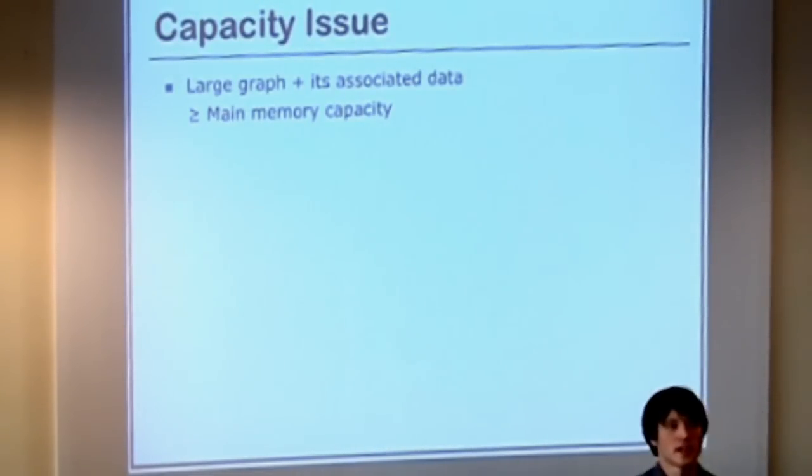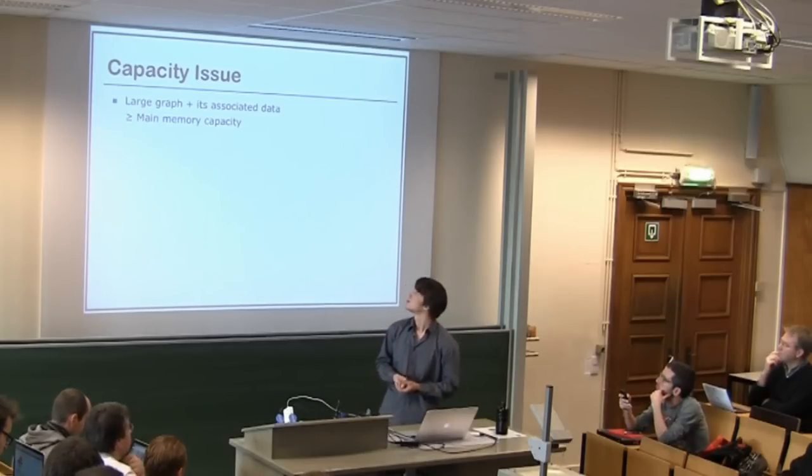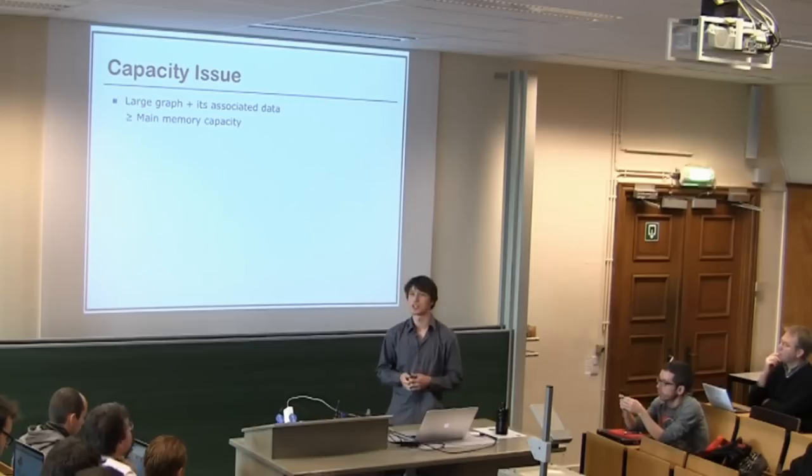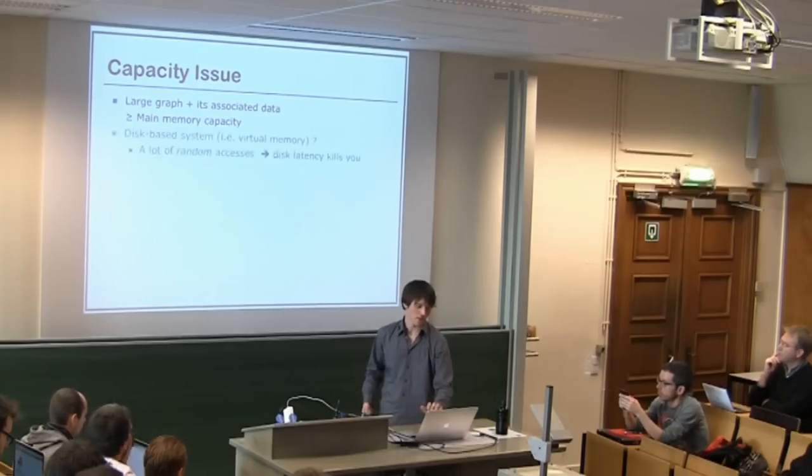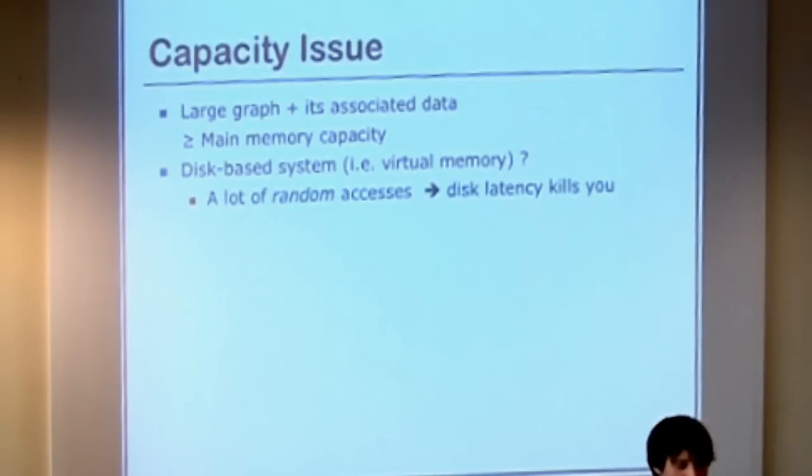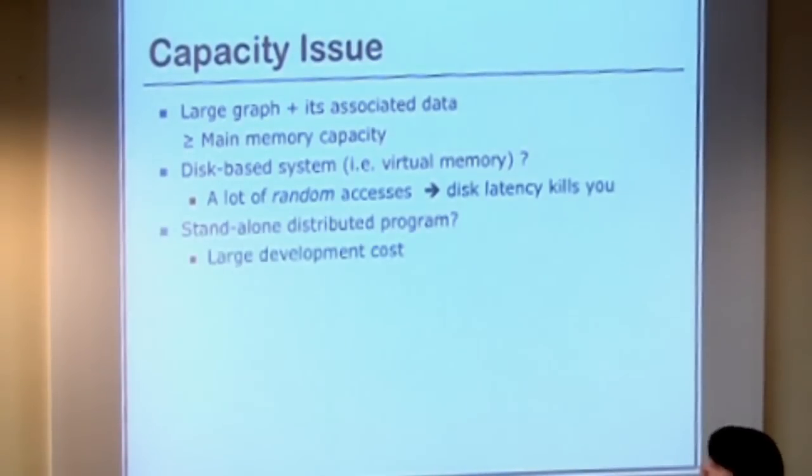But the problem with a shared memory machine usually is that it doesn't have enough memory. Unless you have a really big shared memory machine like the Cray machines, you run out of memory for reasonably large graphs. So how do we solve this? Well, we could use a disk-based system or SSDs, but there are so many random accesses all the time. The disk latency, even if it's an SSD, will just kill you.